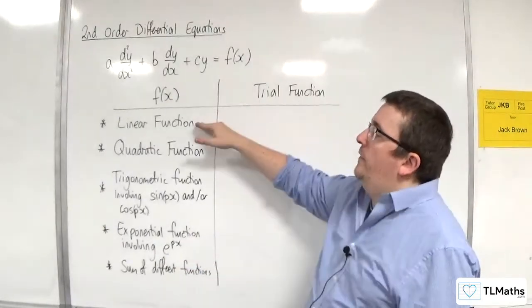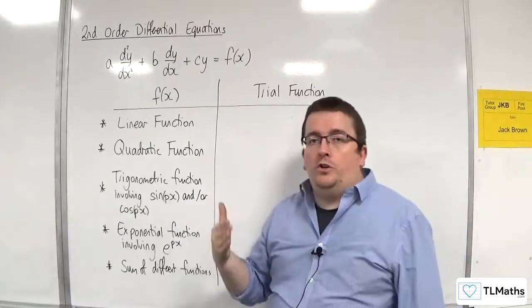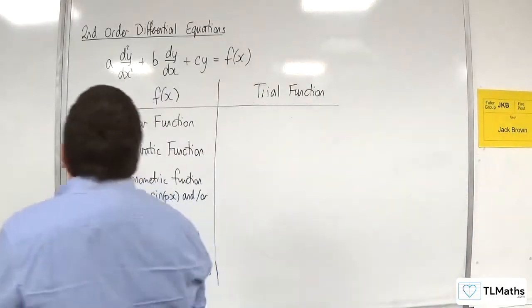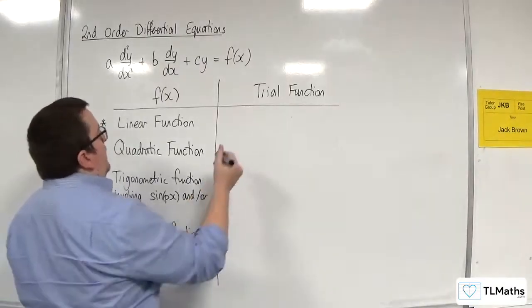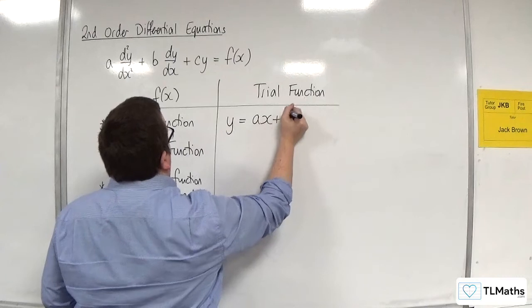So if the f of x is a linear function, your trial function should be a polynomial of the same order. And so it has to be a linear function for your trial function as well. So y is equal to ax plus b.